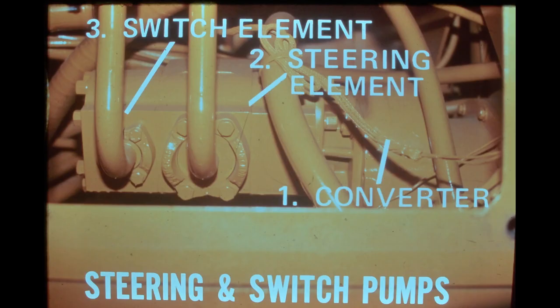The tandem mounted steering and switch pumps are gear type pumps mounted on and driven by the torque converter. Also included in this arrangement is an internally mounted diverter valve located between the two pump elements. The steering element supplies the steering system with oil at 42 GPM at 2,500 RPM.